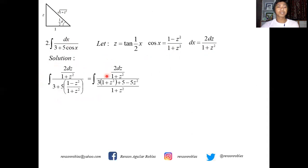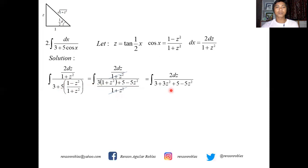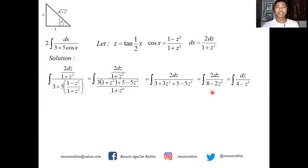Simplifying algebraically: writing the denominator as one fraction with LCD (1+z²) gives 3(1+z²) plus 5(1−z²), all over (1+z²). The equal denominators cancel, leaving the integral of 2dz over (3 + 3z² + 5 − 5z²). Combining like terms: 3+5 gives 8, and 3z²−5z² gives −2z², so we get the integral of 2dz over (8 − 2z²). Factoring out 2 from numerator and denominator gives the integral of dz over (4 minus z squared).